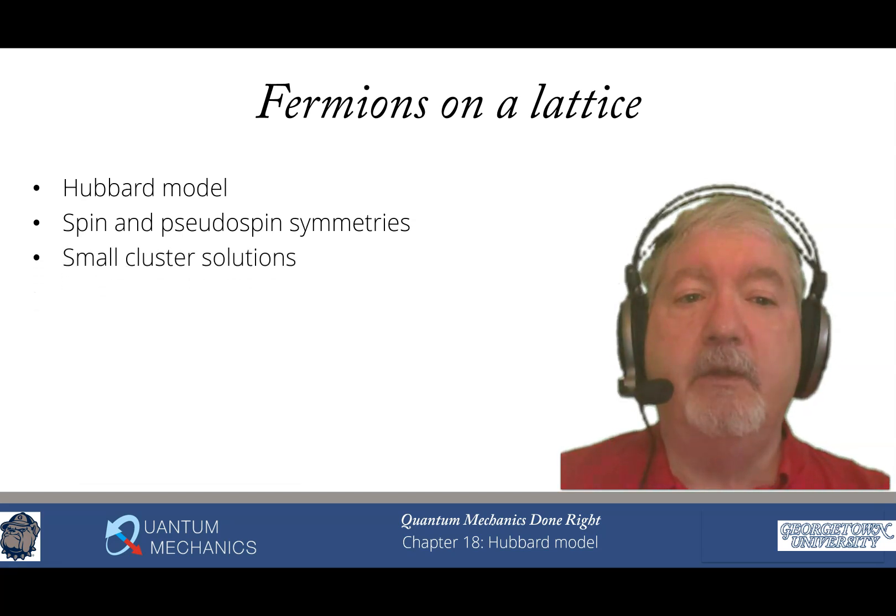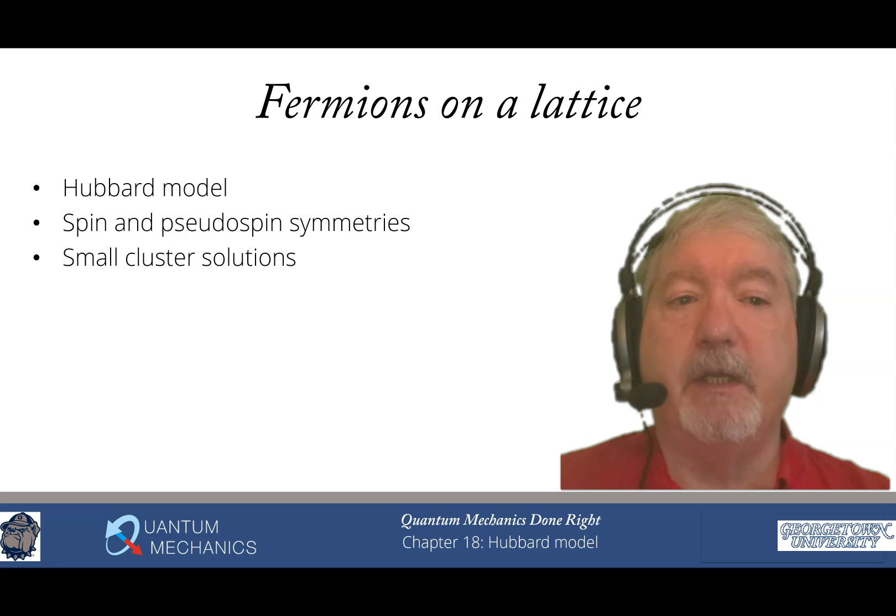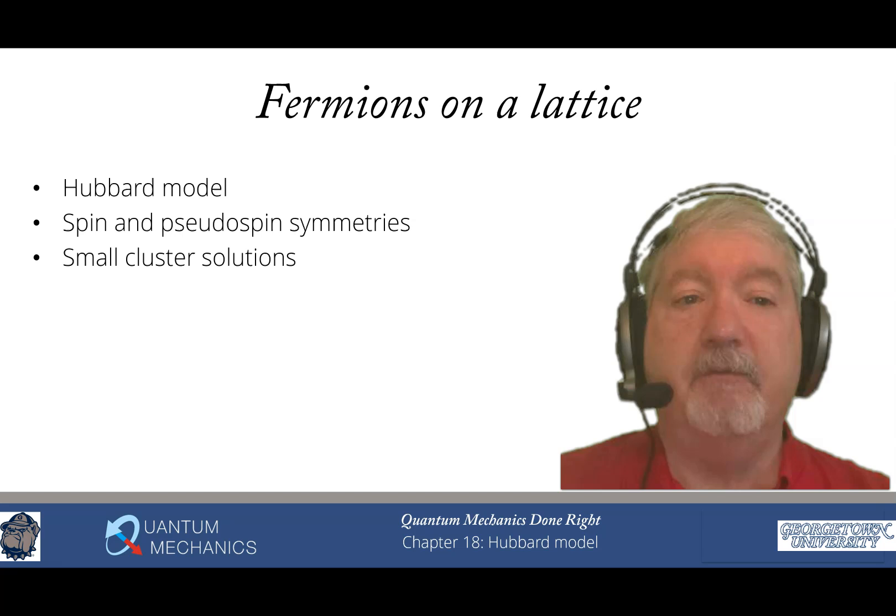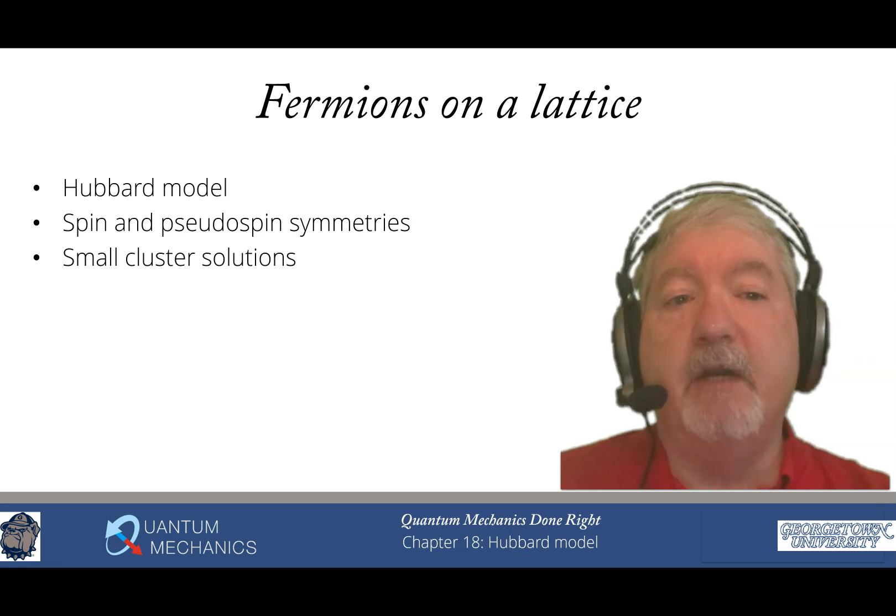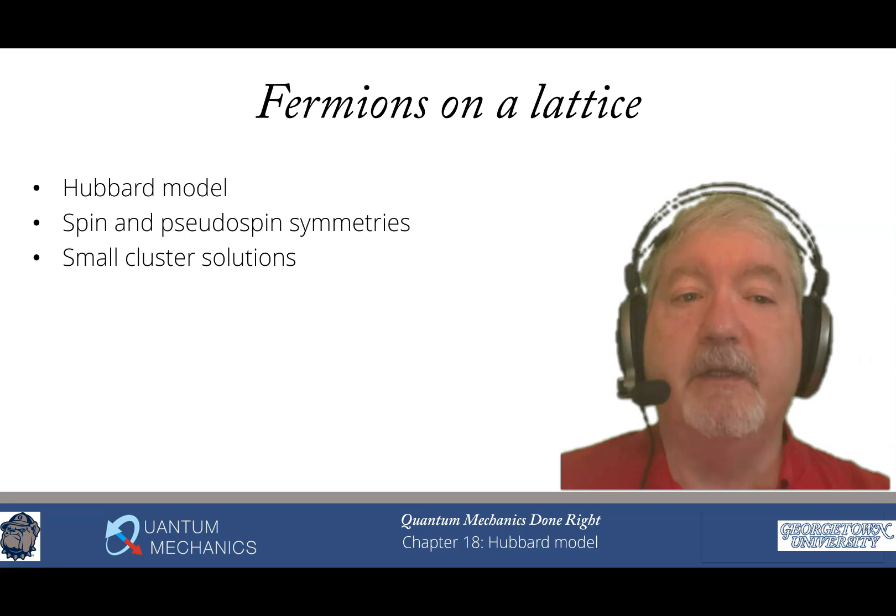One technique we use is small cluster solutions. Instead of having close to Avogadro's number of lattice sites, we have two, four, or eight lattice sites and solve the problem exactly on that smaller cluster. You can learn a lot about the many-body physics and solutions of the Hubbard model by doing that, but of course it doesn't give you everything.